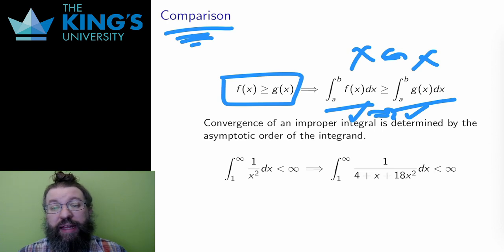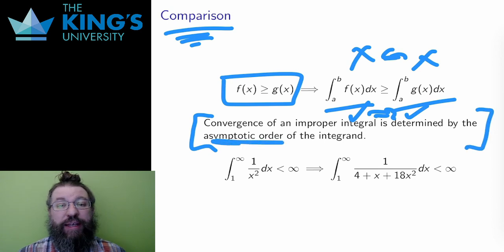Direct comparison has some use and value, but the most useful comparison is asymptotic comparison. The key idea is this: The convergence of an improper integral is determined by the asymptotic order.